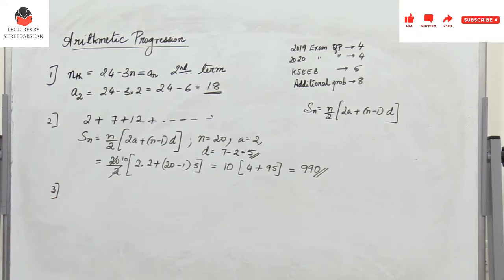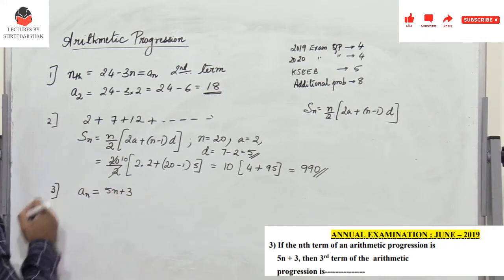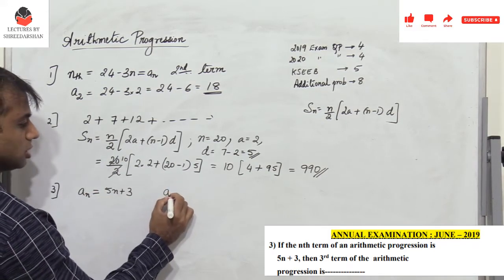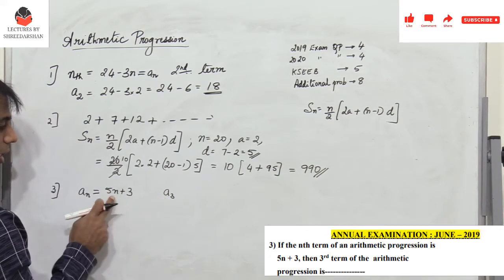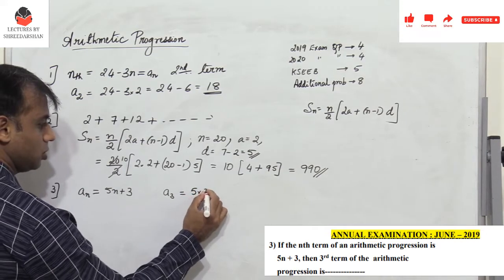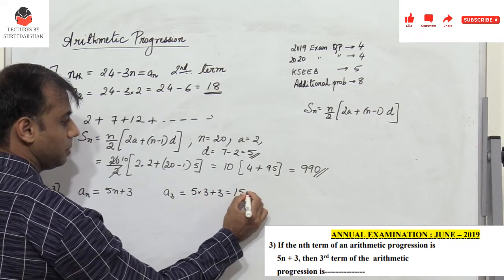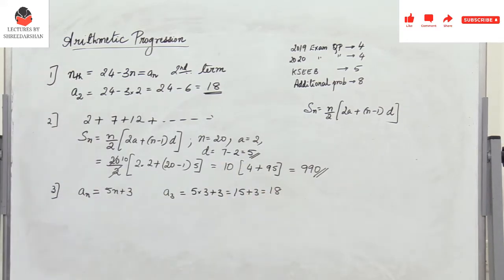The next question appeared in June 2019: aₙ = 5n + 3, find the third term a₃. To find a₃, substitute n = 3: 5 into 3 plus 3 gives 15 plus 3 which is 18. A very simple problem.